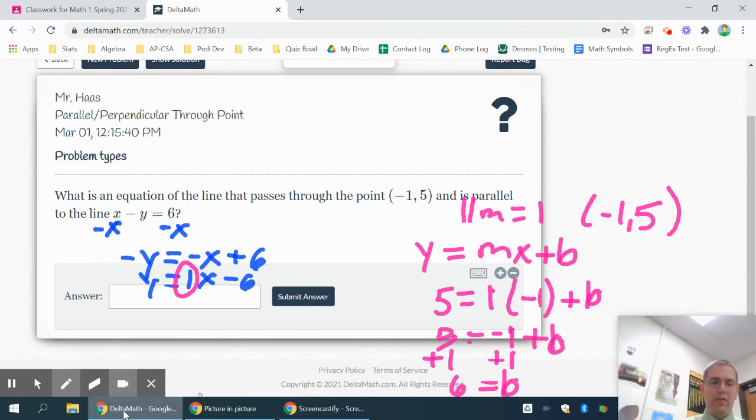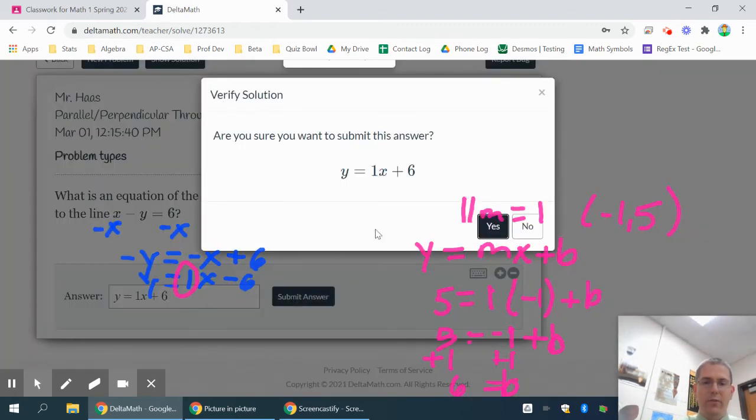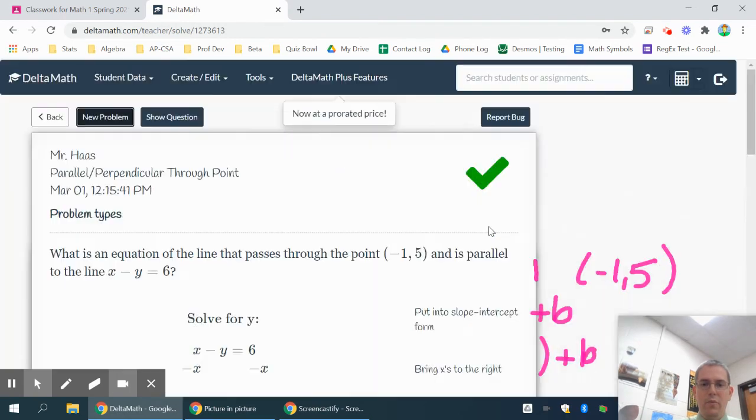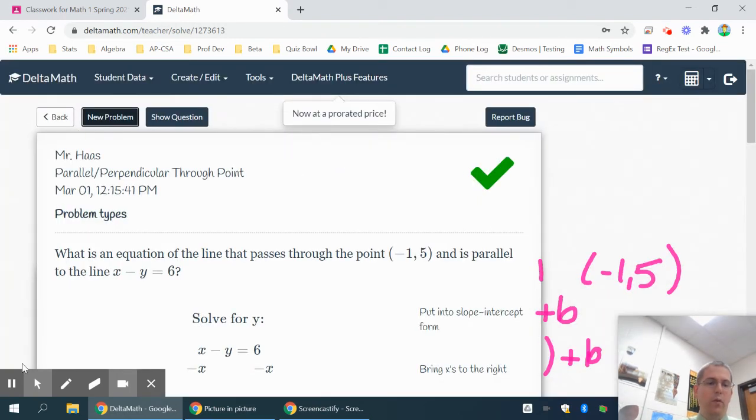So when I go to write my final equation, I'm going to just leave it in y equals mx plus b form. So y equals my slope is the number that goes in front of my x, 1x. And then the y-intercept goes on plus 6. That should be your answer. And we did get this one right. And we'll see if we have time for one more.